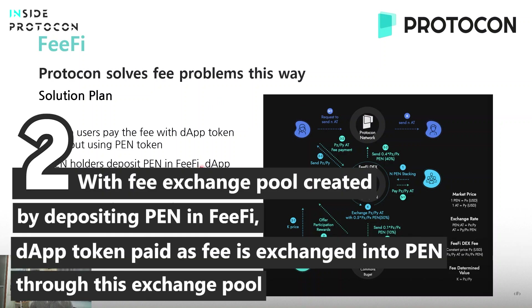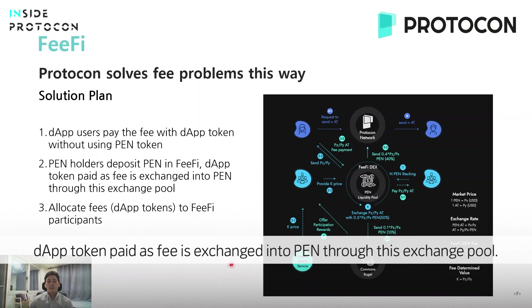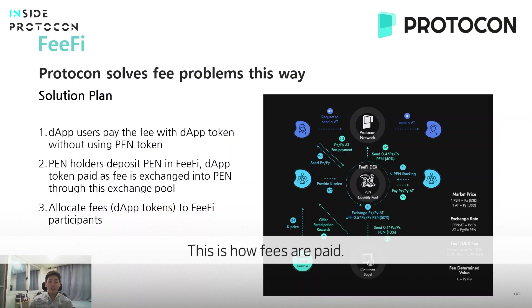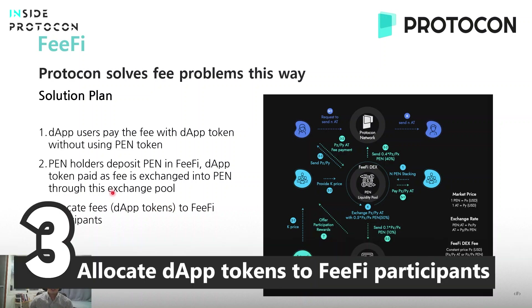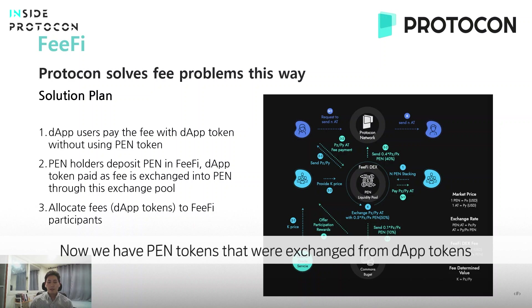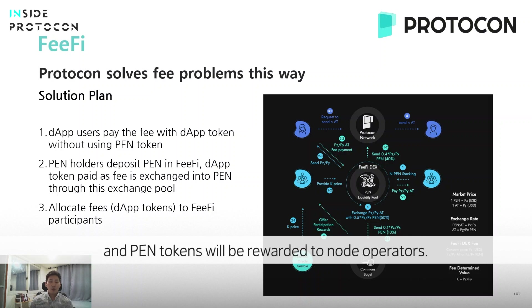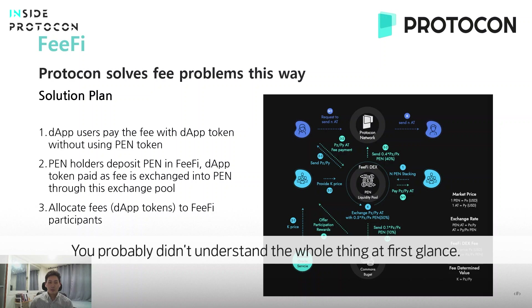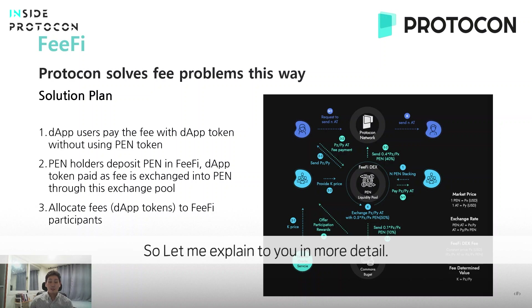Pen holders deposit pen in fee-fi, which is our internal exchange system. The app token paid as a fee will be exchanged into pen through this exchange pool — that's how the fees are paid. Allocated fees, which are DApp tokens, will be sent to fee-fi participants as a reward. The pen tokens that were exchanged will then be reverted to the node operators. Let me explain this in more detail step by step.